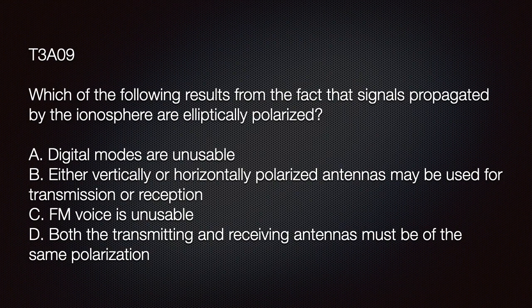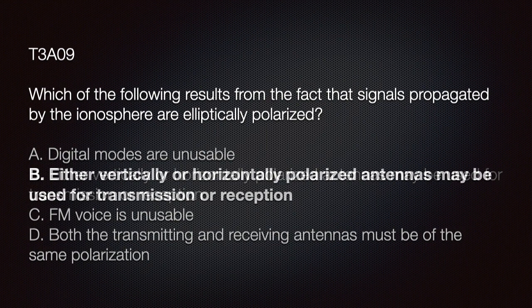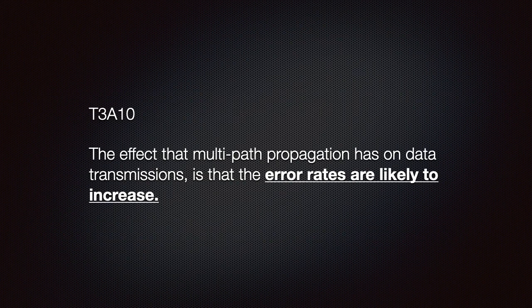The exam question: Which of the following results from the fact that signals propagated by the ionosphere are elliptically polarized? Options: A — digital modes are unusable; B — either vertically or horizontally polarized antennas may be used for transmission or reception; C — FM voice is unusable; D — both antennas must be the same polarization. The correct answer is B: either vertically or horizontally polarized antennas may be used for transmission or reception.